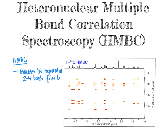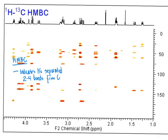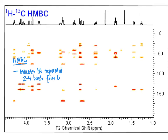If we take a look at an HMBC spectrum such as the one shown here that I'm zooming in on, keeping in mind that we are observing signals for protons that are separated from carbon atoms by two to four bonds, we can piece together information about the molecule. For example, focusing on this signal circled in green that shows up on the x-axis at about 2.4 ppm, this indicates that the proton signal is at 2.4 ppm. That particular proton, if we follow the dotted line up, is separated by two to four bonds from each of the carbon atoms at the chemical shifts I'm circling here.